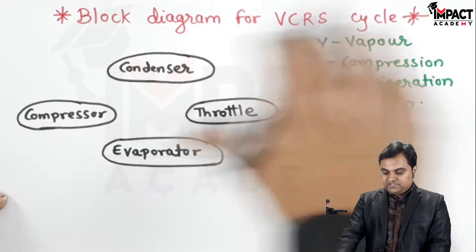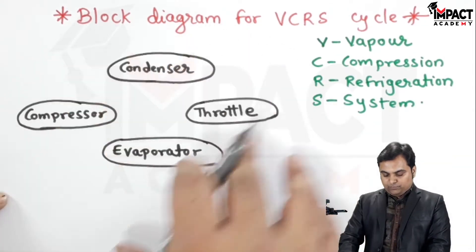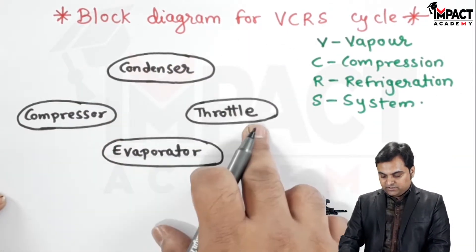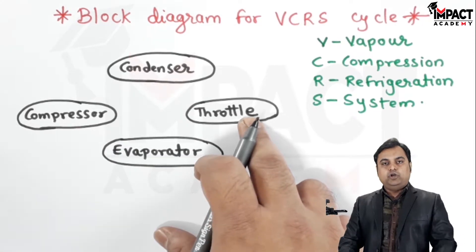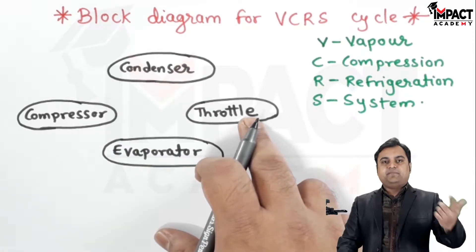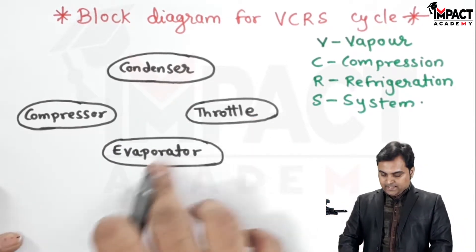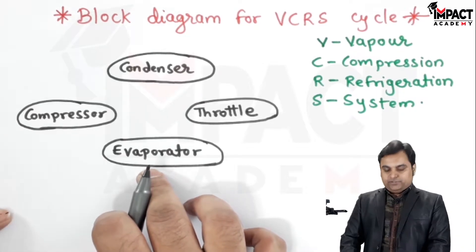In VCRS there are four components: compressor, condenser, throttle valve (also called expansion valve), and evaporator.